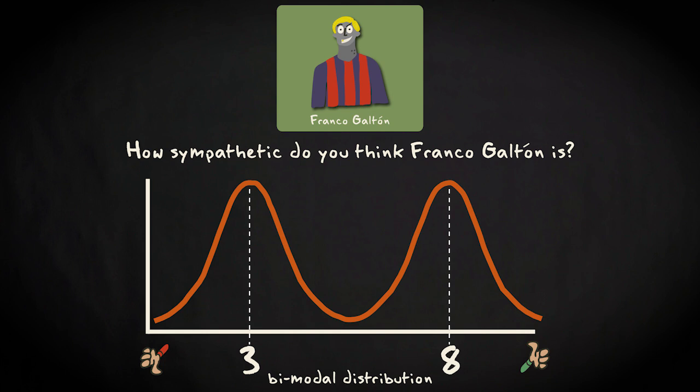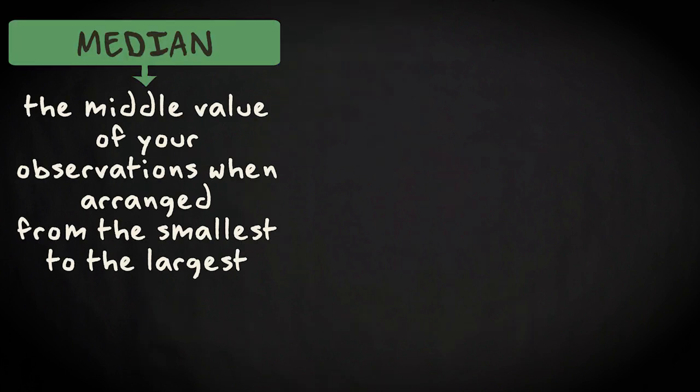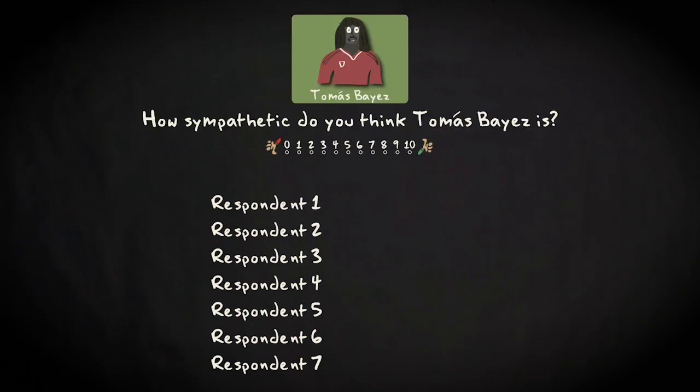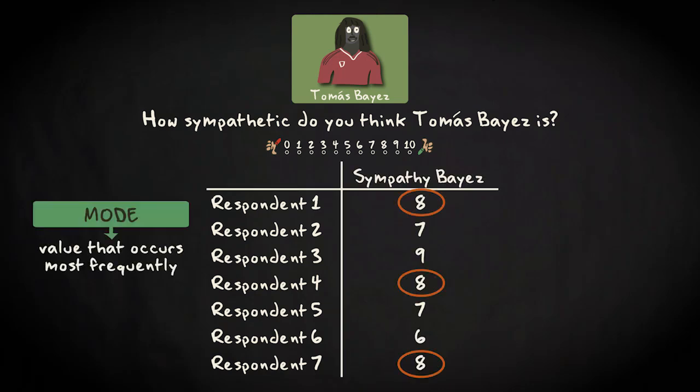The second measure of central tendency is the median. The median is nothing more than the middle value of your observations when they are ordered from the smallest to the largest. Imagine you have also asked seven of your respondents what they think of another famous football player, named Thomas Bayes. Let's assume that this is the data matrix of your study. The mode here is 8, the value that occurs most often.